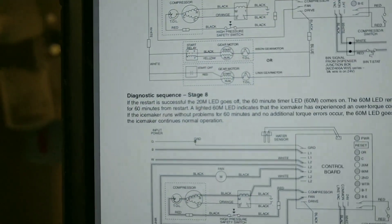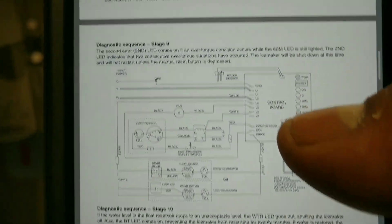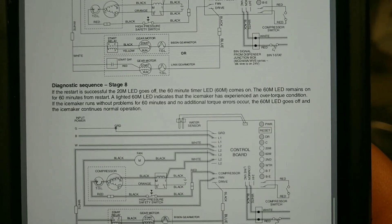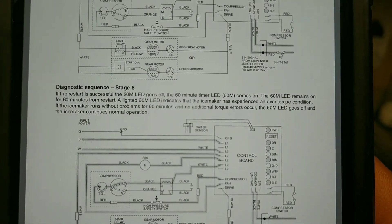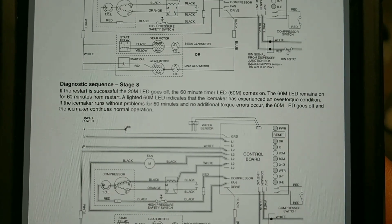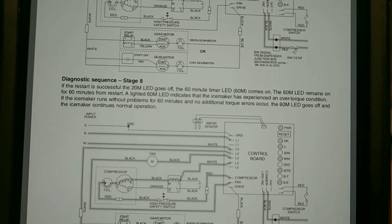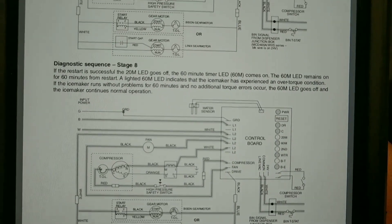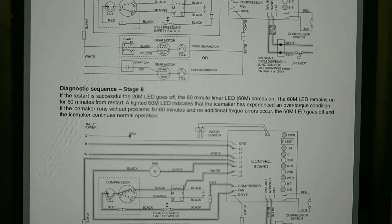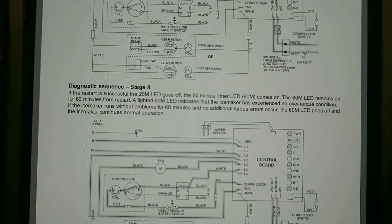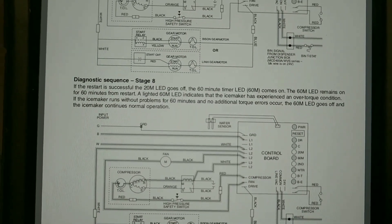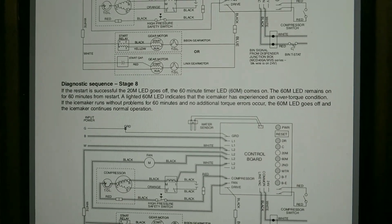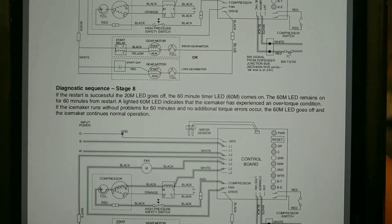Now my 60m light was also on. The 60m light is pretty much a 60-minute timer after the 20m light has come on. It says if a restart after the 20m light goes off is successful, the 60-minute timer LED comes on.